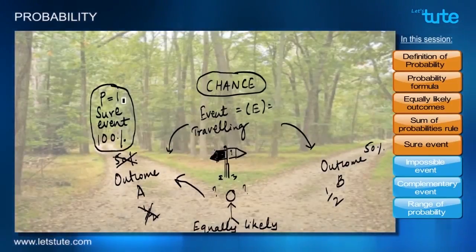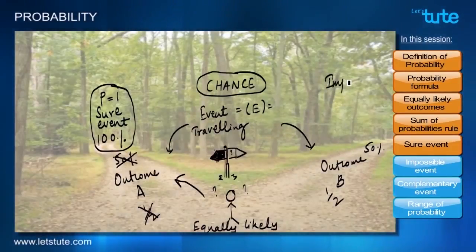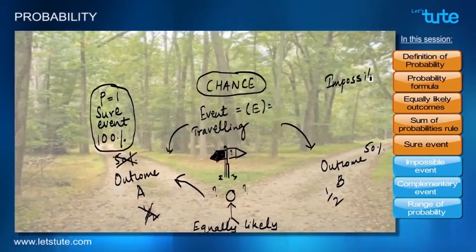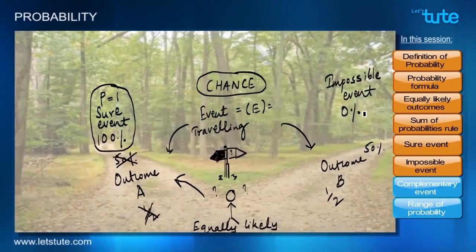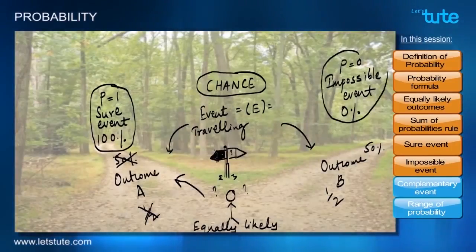Having said that, if there is a sure event, can we say that there is an impossible event also where the chance of anything happening is 0% and the probability is zero? This is going to be a lower limit. Can such an event exist?